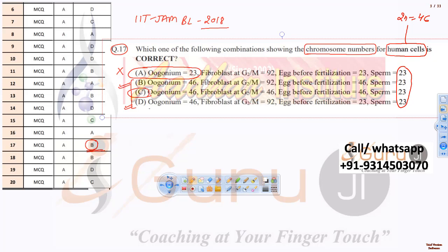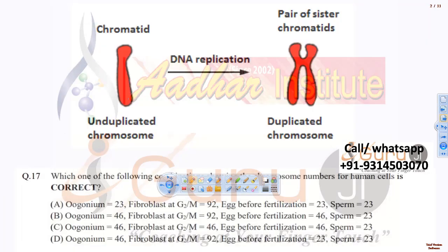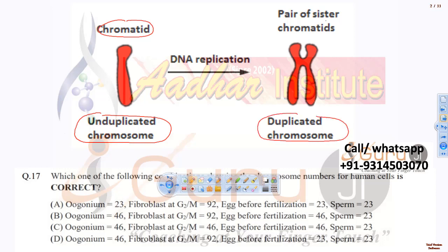First, let me clarify about chromatid and chromosome — there is nothing like two separate terms; both are the same. A chromatid is essentially an unduplicated chromosome, and a chromosome as commonly understood is a duplicated chromosome having a pair of sister chromatids. So chromatid and chromosome should be considered interchangeable, differing only in duplicated versus unduplicated state.